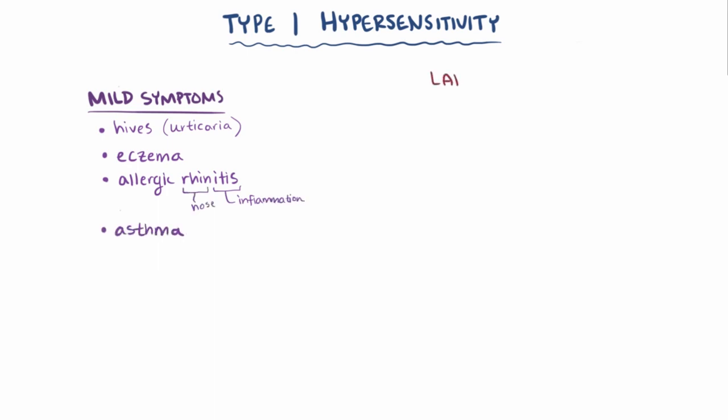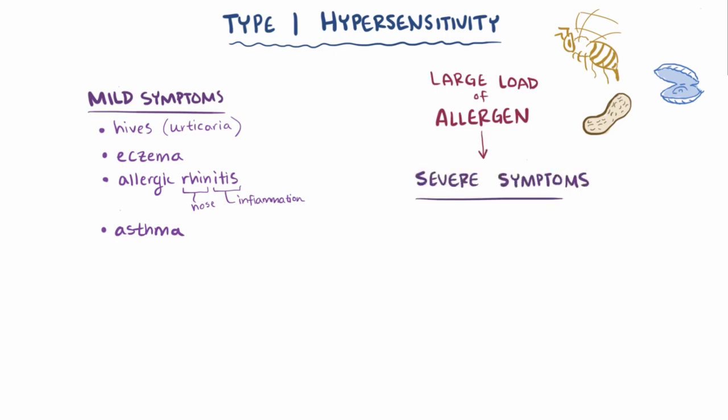Certain people though, when exposed to a large load of specific allergens, like with bee stings, seafood, or peanuts, can have a really severe and potentially life-threatening allergic reaction.